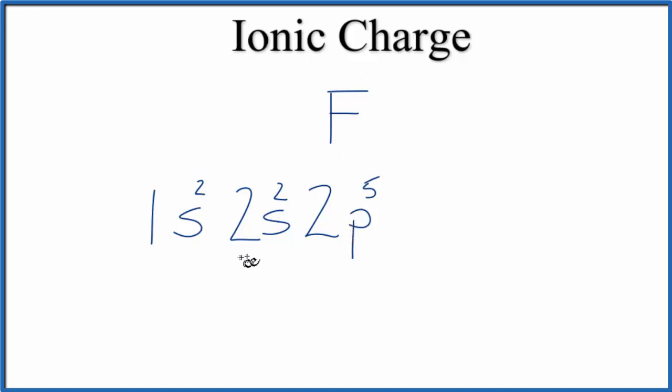When we look at this configuration, we can see that the second energy level, this right here, we have 7 electrons, 7 valence electrons. If we get one more, that'll give us 8, which is really stable. That's like the noble gas, neon.